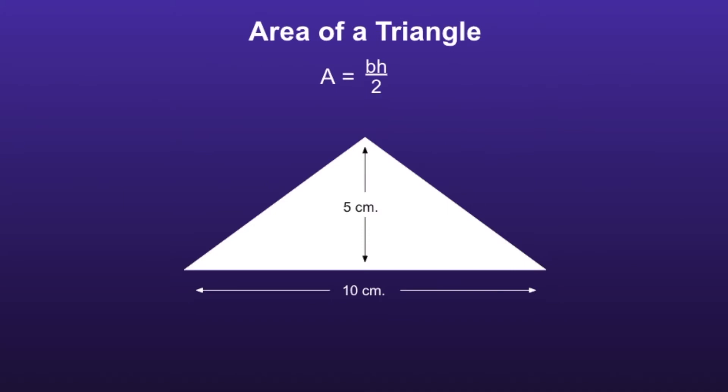In order to find the volume of a triangular prism, we're going to need to know how to find the area of a triangle. The formula to find the area of a triangle is A equals BH divided by 2, which means area is equal to base times height divided by 2. Notice the base times height is in parentheses — this lets us know that we have to multiply the base and the height first before we divide by 2.